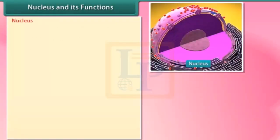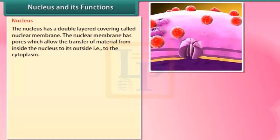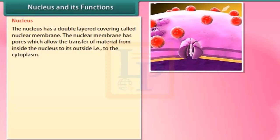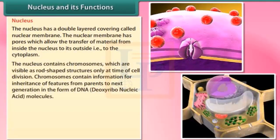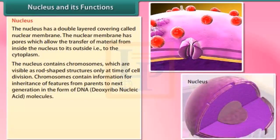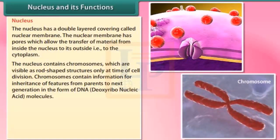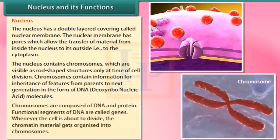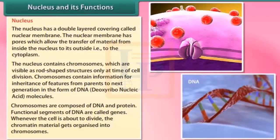Nucleus: the nucleus has a double-layered covering called the nuclear membrane. The nuclear membrane has pores which allow the transfer of material from inside the nucleus to its outside, that is, to the cytoplasm. The nucleus contains chromosomes, which are visible as rod-shaped structures only at the time of cell division. Chromosomes contain information for inheritance of features from parents to the next generation, in the form of DNA (deoxyribonucleic acid) molecules. Chromosomes are composed of DNA and protein. Functional segments of DNA are called genes.